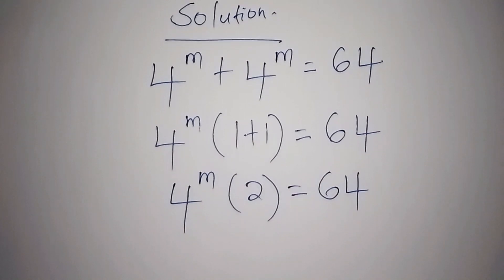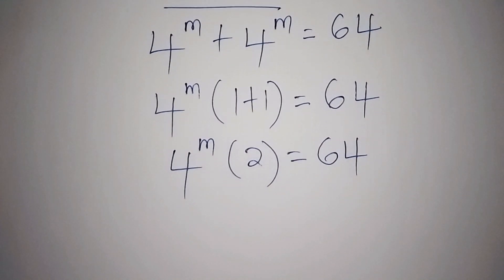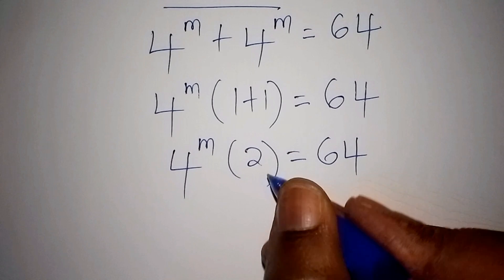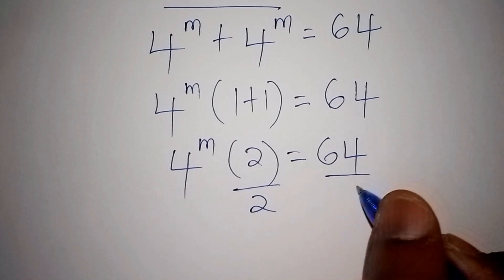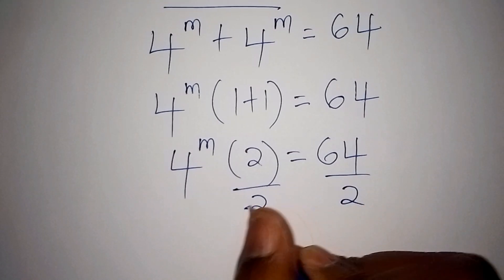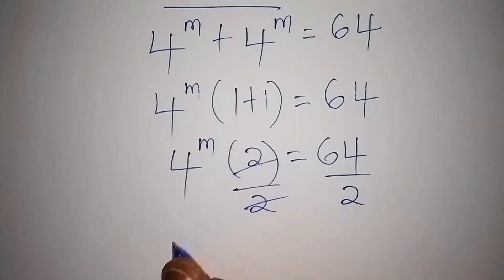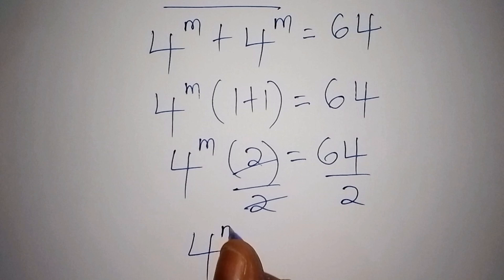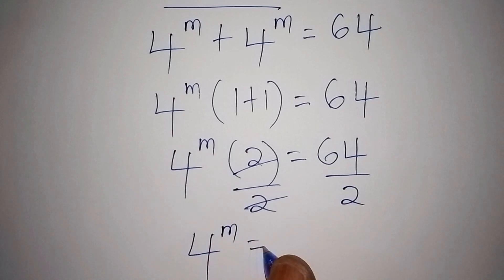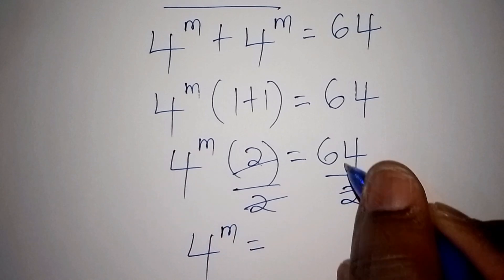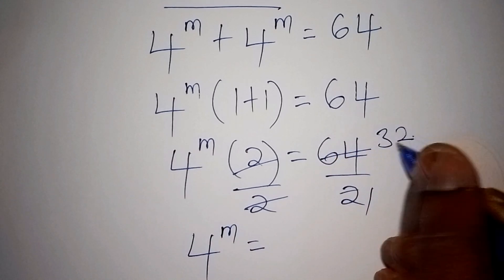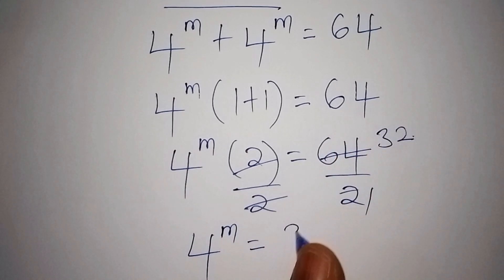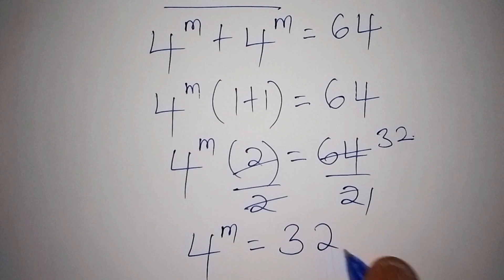We shall now divide both sides by 2 so that we remain with 4 to the power of m. So 4 to the power of m equals 64 divided by 2, which is 32.